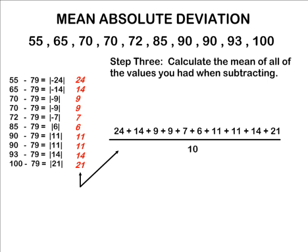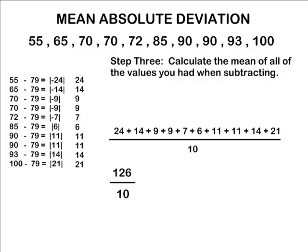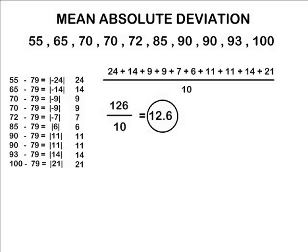So next we are going to add those 10 distances that we came up with and divide by 10 because we have 10 numbers that we added all together. The sum of those 10 distances away from the mean is 126. After dividing 126 by 10, that would give us a quotient of 12.6. Therefore the mean absolute deviation is 12.6.